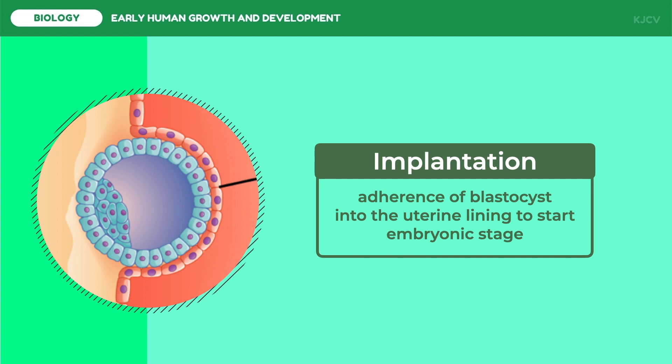If the growing pre-embryo fails to attach to the uterus, it will grow wherever it attaches, leading to ectopic pregnancy, which is harmful to both the child and the mother. Most ectopic pregnancies are tubal pregnancies, meaning the baby grows in the fallopian tube, which is not elastic. The baby must be aborted to save the life of the mother.